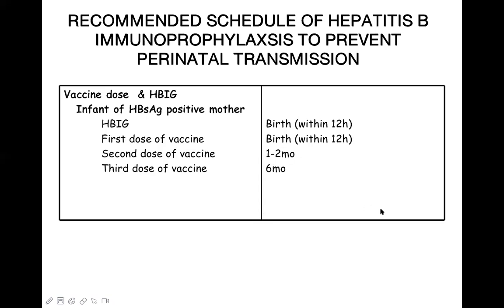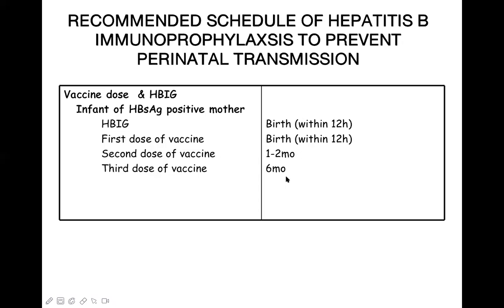The advantage of this protocol: if a newborn gets hepatitis B from the mother, there is 70 to 90% chance of developing chronic liver disease and cirrhosis by 8 to 10 years of life. This immunoprophylaxis schedule can prevent those diseases from happening.